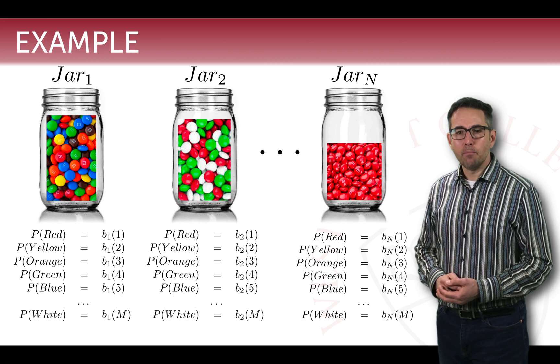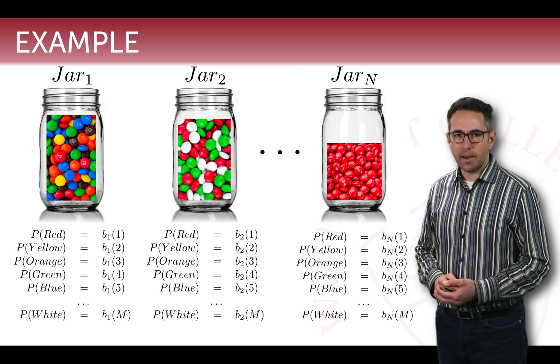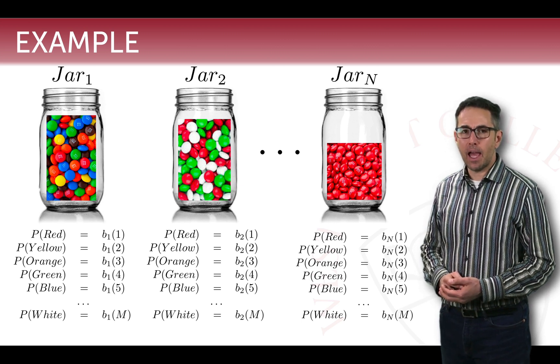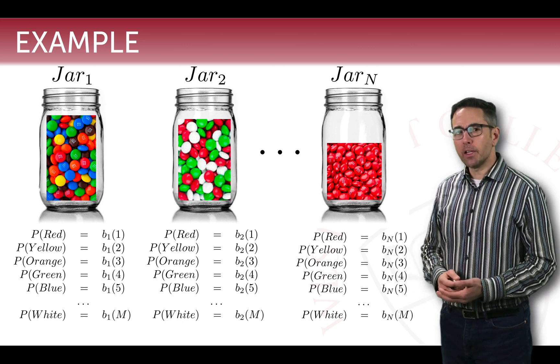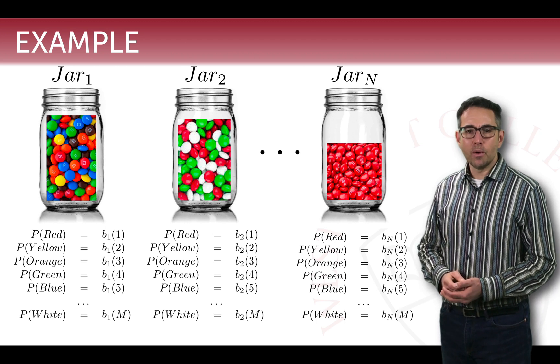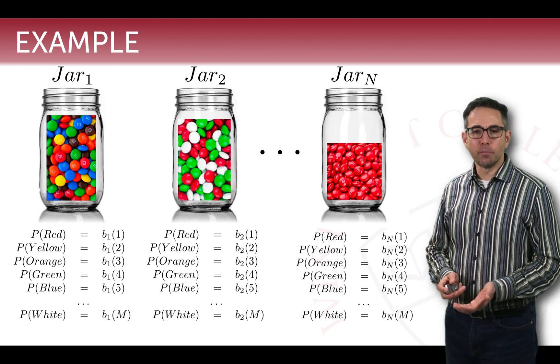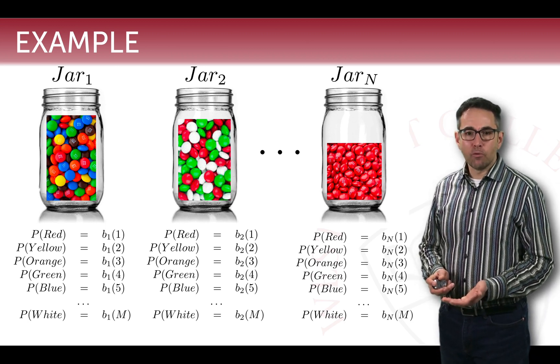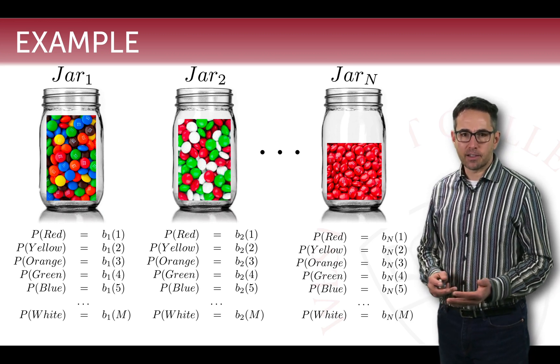So in jar N, Bn sub 1 is 1. That means the probability of drawing an M&M that has color number 1 is 1. But if we look at the first jar and we look at that first distribution of candies, we would say that the probability of red, yellow, orange, green, blue, those would all be about equal. The probability of white would be 0 because that's not observed within our jar, at least in this diagram.